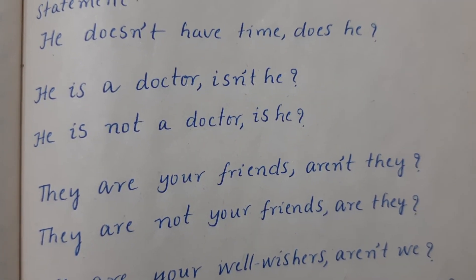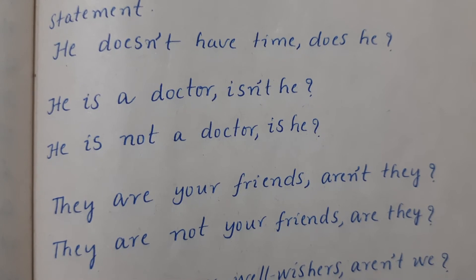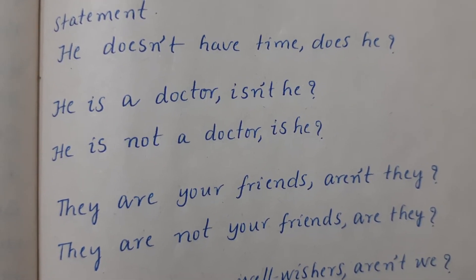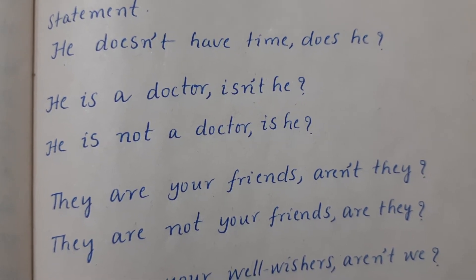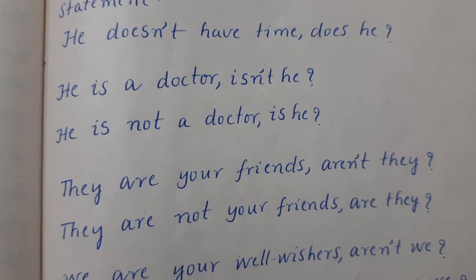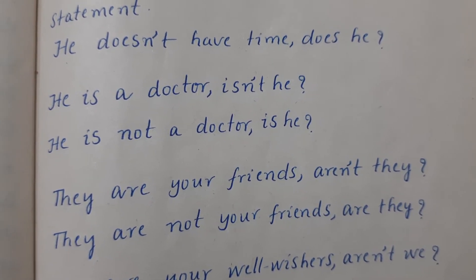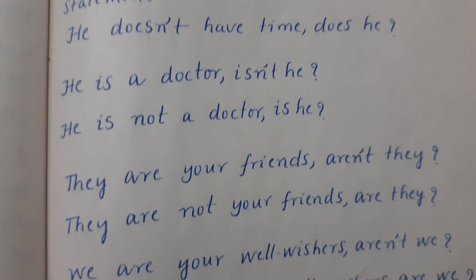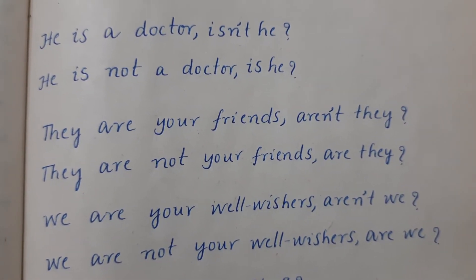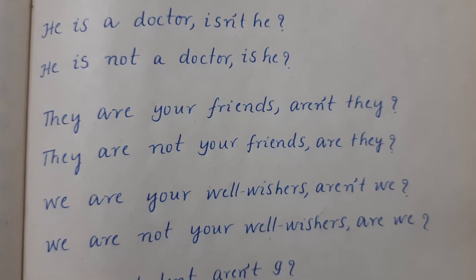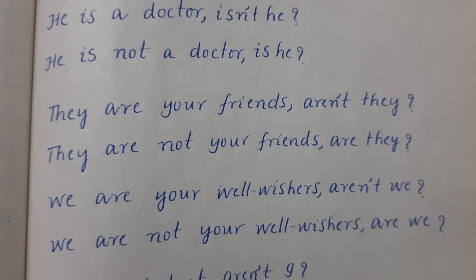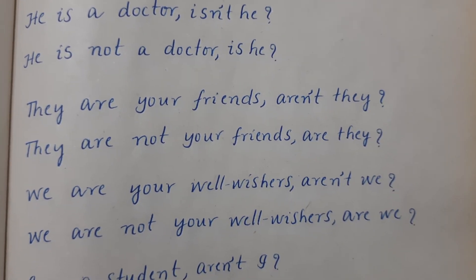'They are your friends, aren't they?' — positive statement, negative tag. 'They are not your friends' — negative statement, so question tag will be positive. 'We are your well-wishers, aren't we?' — positive statement, negative tag. 'We are not your well-wishers' — negative statement, so question tag will be positive.